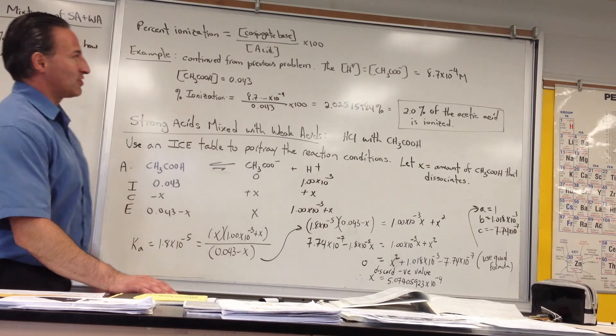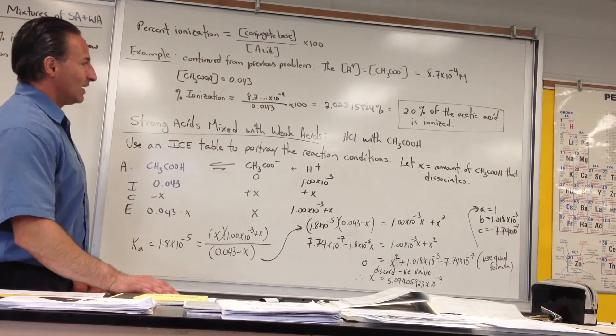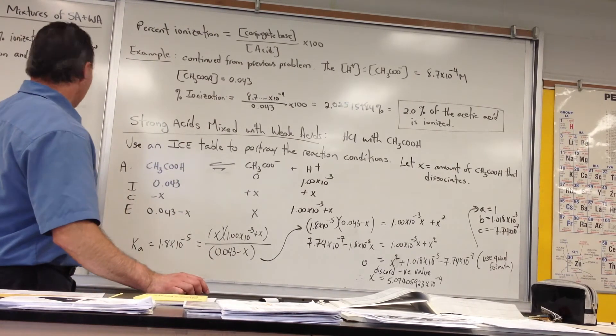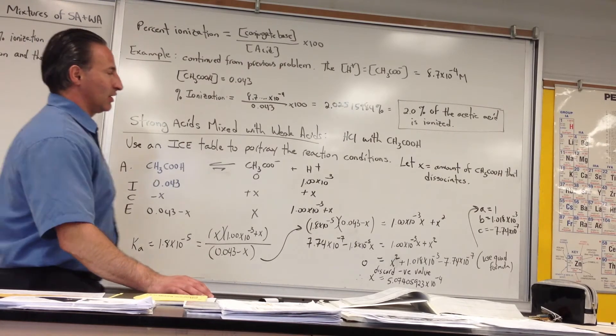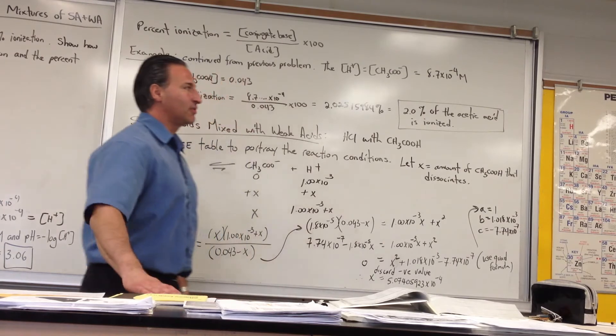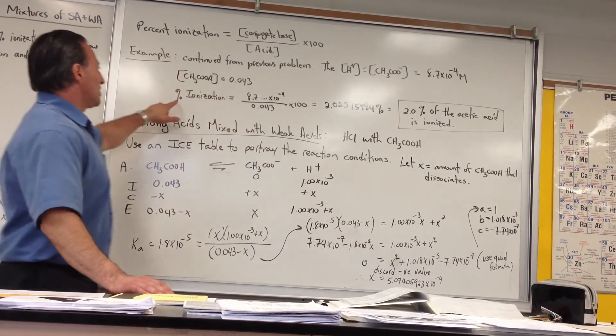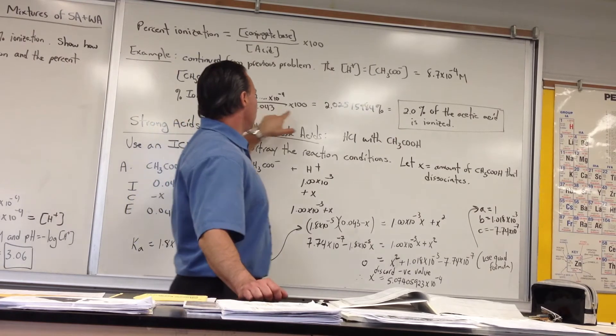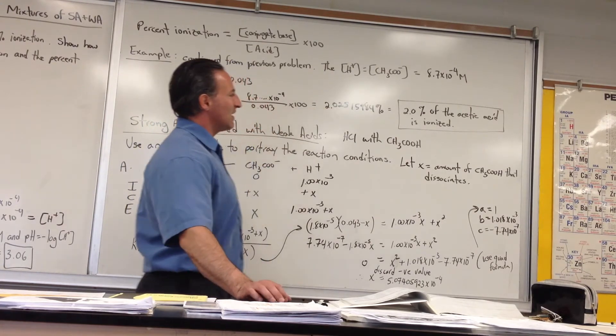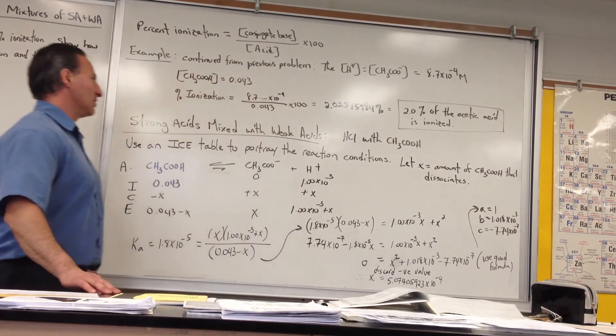You'll notice the correct number of significant figures is only 2 in this case, which produces no difference between the first iteration and the last iteration of the calculation. But nevertheless, sometimes it is important enough to make a difference. The percent ionization of the acetic acid is 8.7 divided by 0.043 times 100, so it's 2% ionized under these conditions.